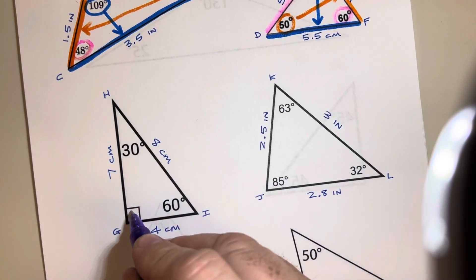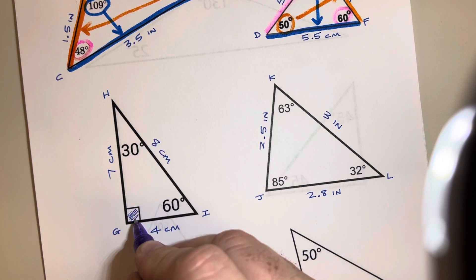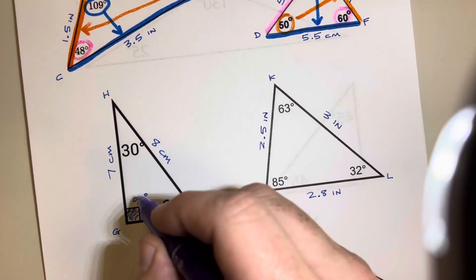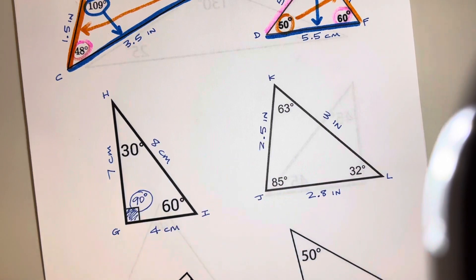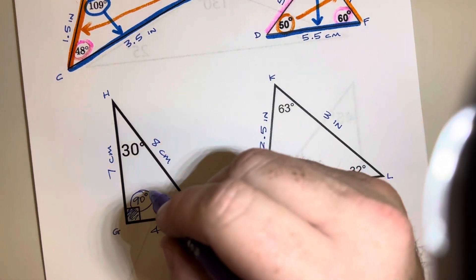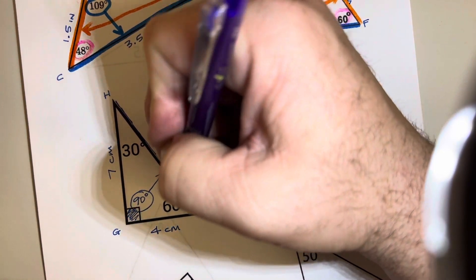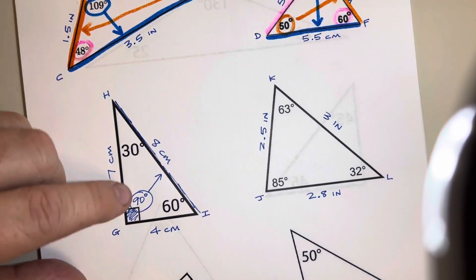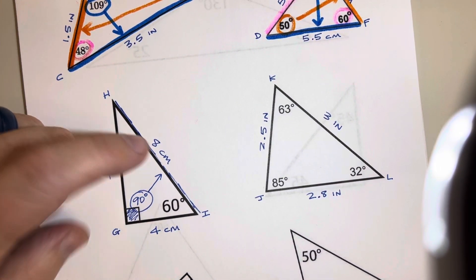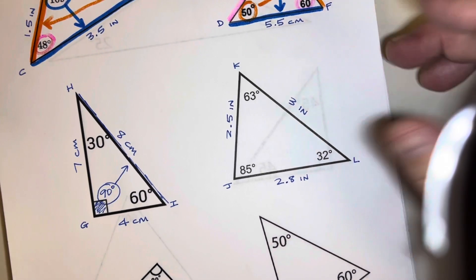And you can see it in these other triangles. This one, this little square right here, whenever you see that, that means 90 degrees. So this is the biggest angle. And if you look across, 8 centimeters is the biggest or the longest side. So again, we have the longest angle across from the longest side.